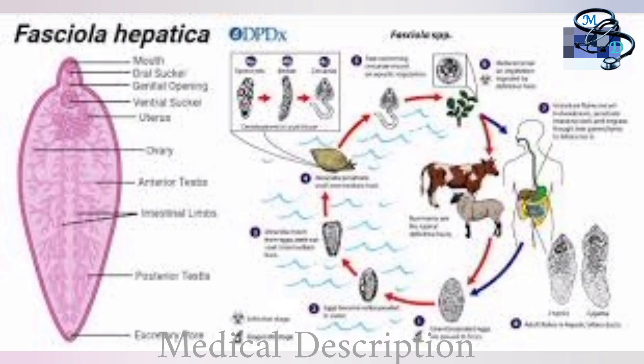The young worm moves through the intestinal wall, the abdominal cavity, and the liver tissue into the bile ducts, where they develop into mature adult flukes that produce eggs. The pathology is typically most pronounced in the bile ducts and liver. Fasciola infection is both treatable and preventable.